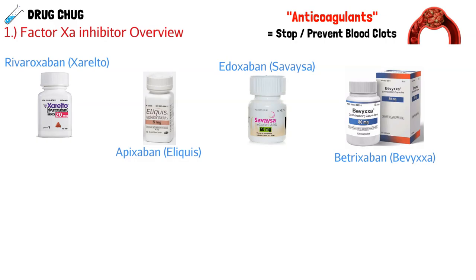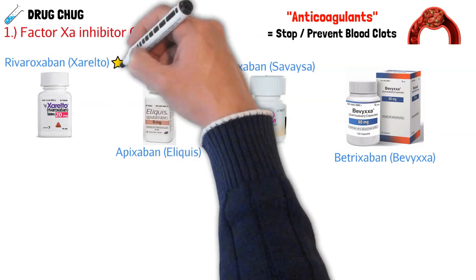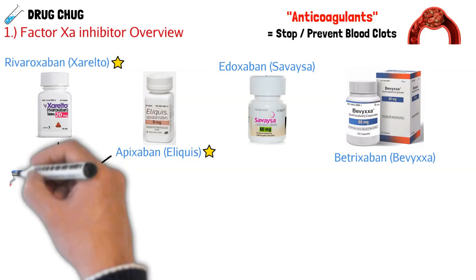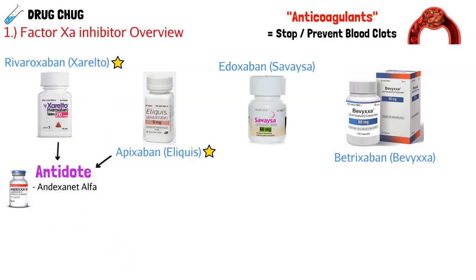You're going to see rivaroxaban and apixaban prescribed more often, especially in a hospital setting. The reason is that only these two have an antidote to reverse their effects, and that antidote is andexanet alfa. Prescribers feel more comfortable giving a drug that has an antidote. All that antidote does is reverse the anticoagulation — it stops the drug from thinning the blood too much.